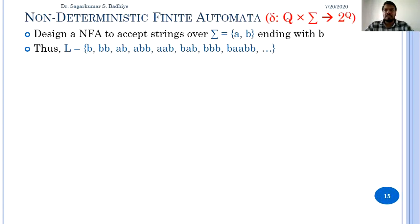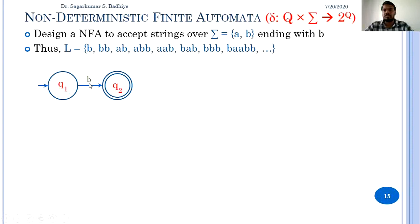To make this NFA, let us start with initial state q1. From q1, to accept the first string B, we must go to a final state by reading B from q1. So there must be a transition from q1 to a final state q2 on reading B. This automata now will accept the string B. To accept BB, the automata may start from q1, read a B and go to q1, or on getting the first B go from q1 to q2, and on q2 read a B and stay in q2.